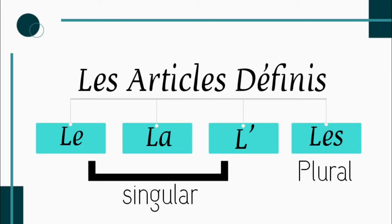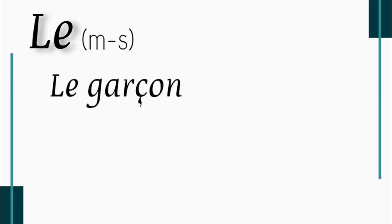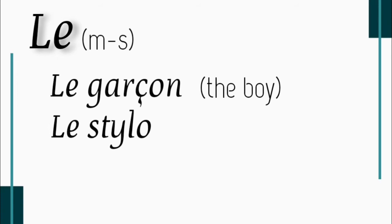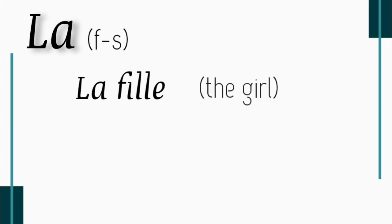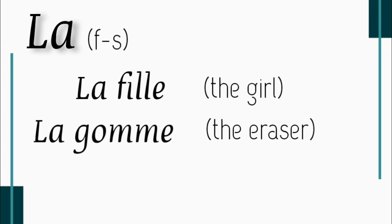Le will be used with masculine singular nouns. For example: le garçon — the boy. Le stylo — the pen. La will be used with feminine singular nouns. For example: la fille — the girl. La gomme — the eraser.